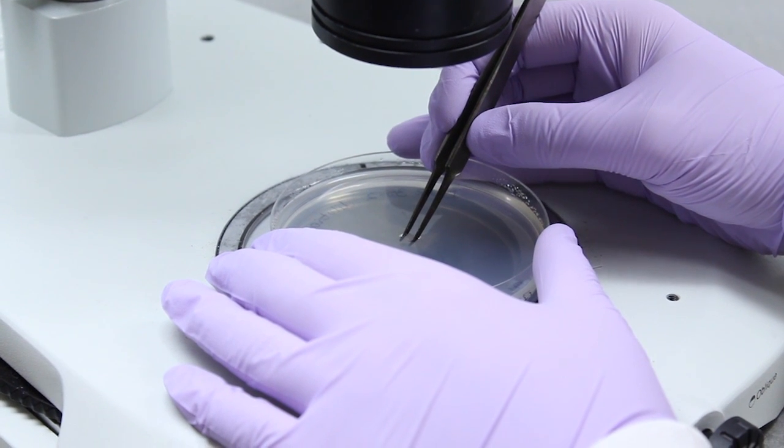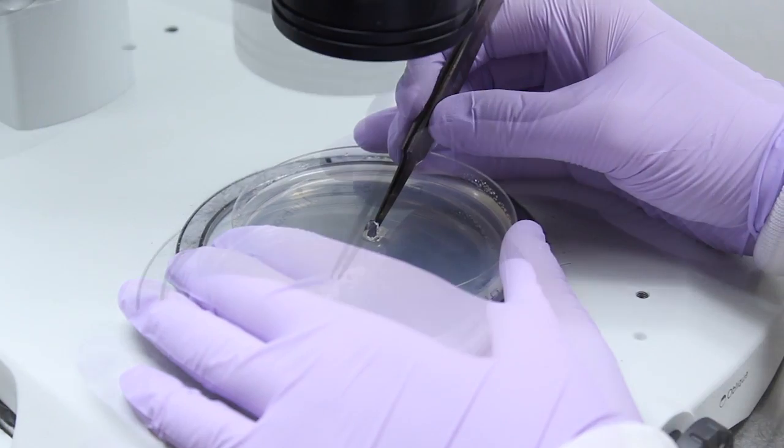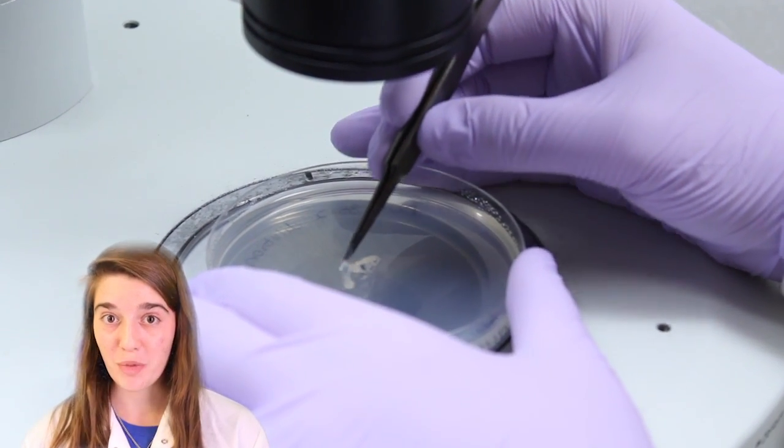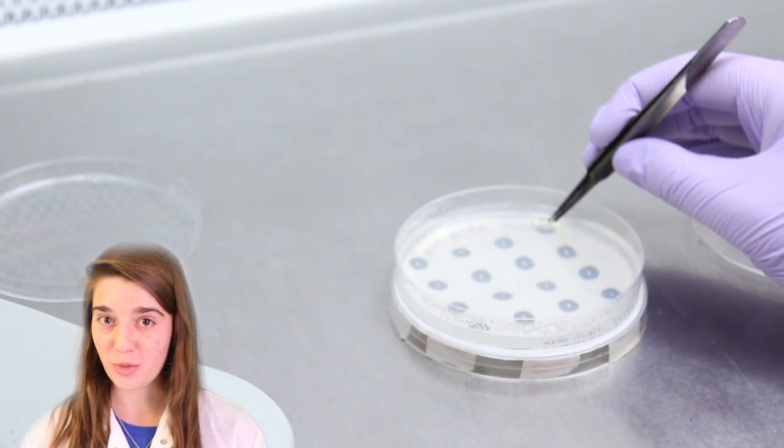Place your dilution plate under the microscope and pick one single germinated spore onto one of the 16 spots. It is very important that you pick up only one germinated spore. We only want a single individual in each of these spots.